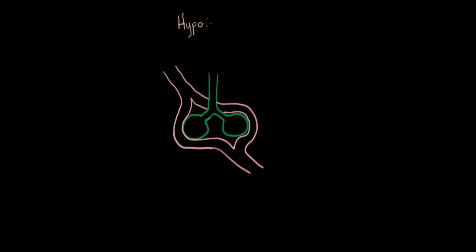Our lungs have this neat little trick called hypoxic vasoconstriction. It's basically a way of describing how the lungs behave to maximize their function. I've drawn you this little diagram here to show you how the blood vessel system interacts with the air spaces in the lungs. This little phenomenon has to do with how they interact as well. The hypoxic part is referring to the fact that it's low in O2.